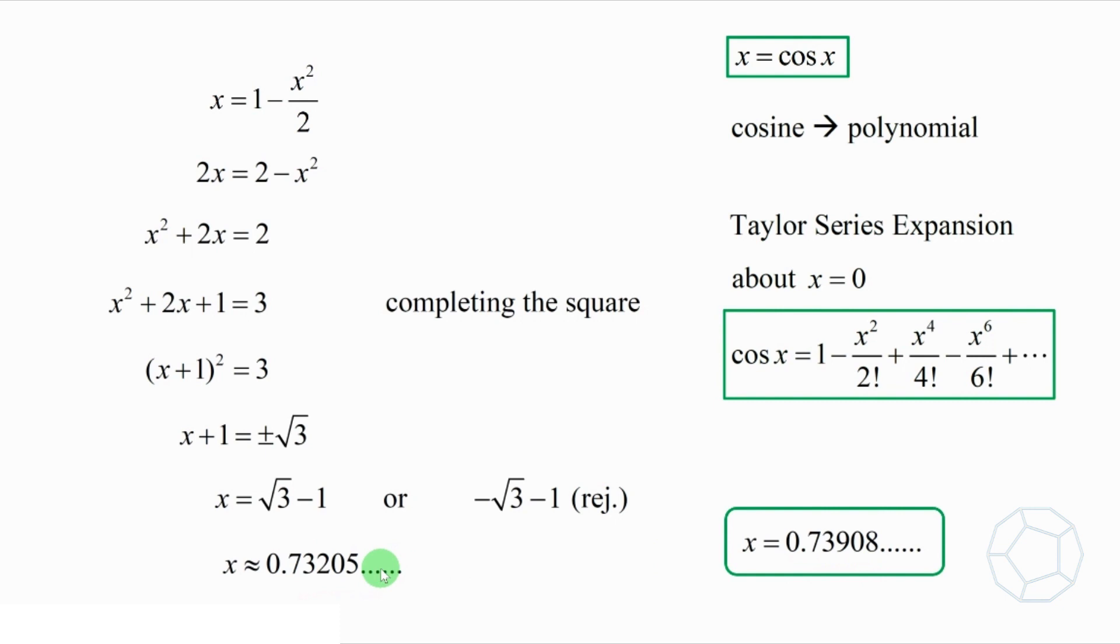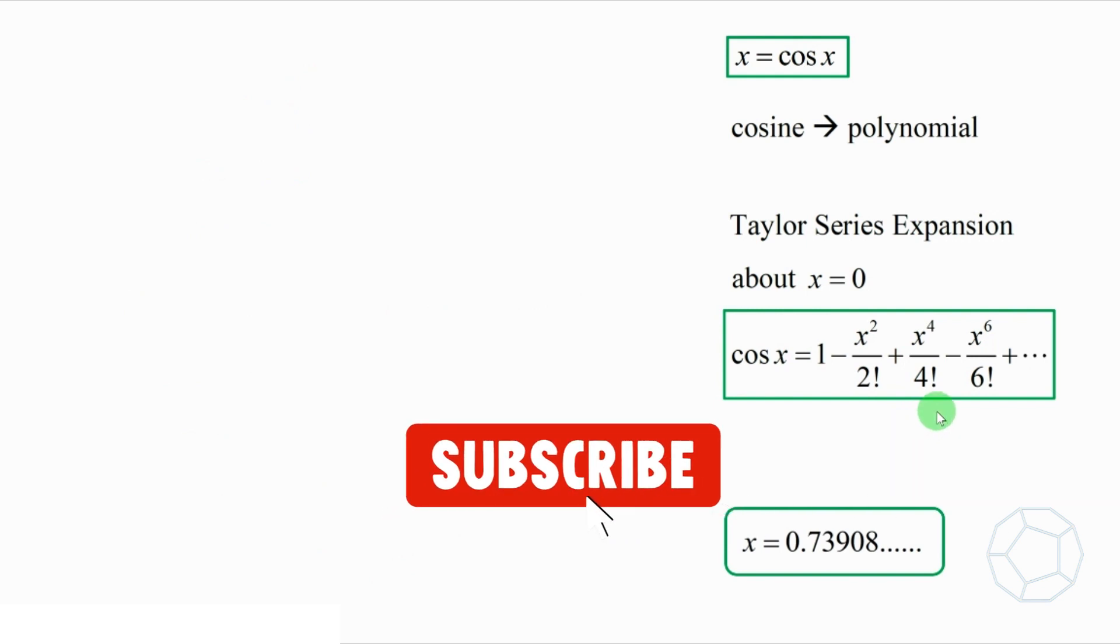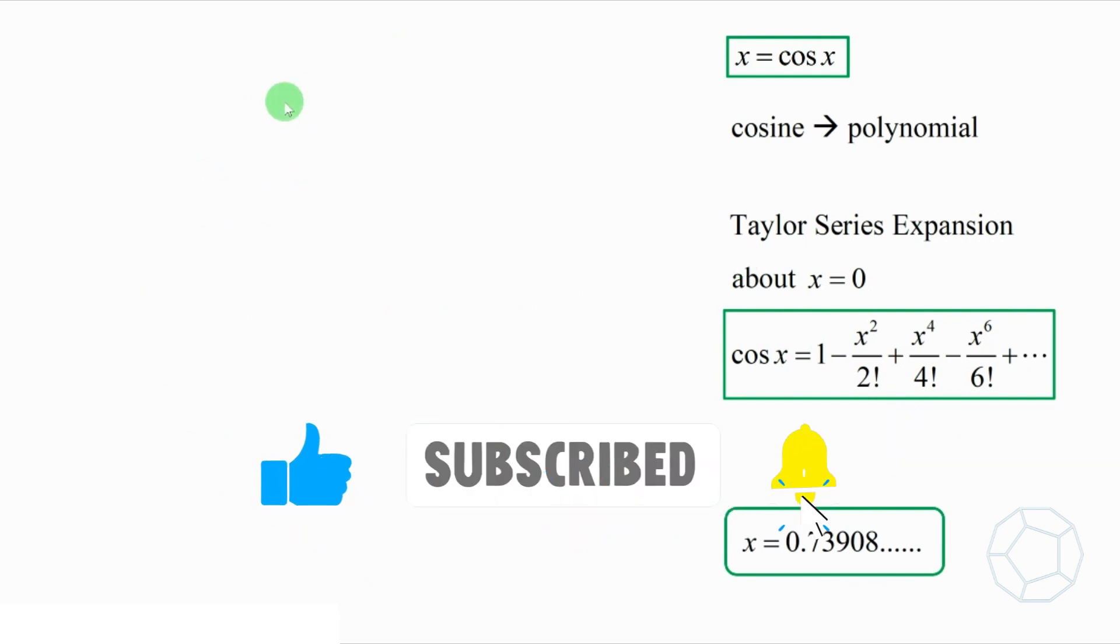Well, can we get an even better answer from the Taylor series? Sure, why not? Let's take the approximation up to the x to the power 4 term. Therefore, the equation is x is equal to 1 minus x squared over 2 plus x to the power 4 over 24.